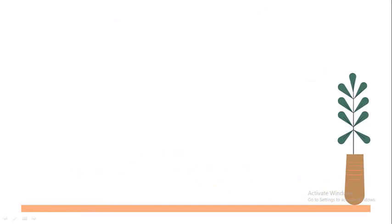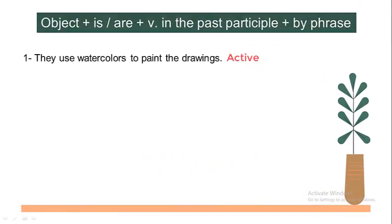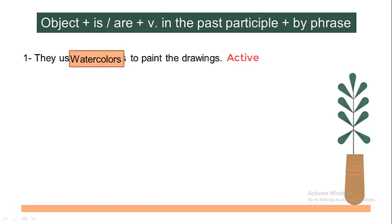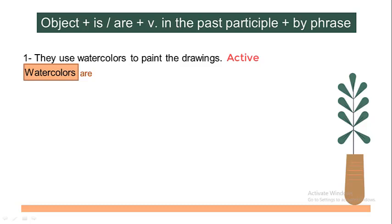Let's apply this rule to these exercises. Number one: they use watercolors to paint the drawings. They is the subject, use is the main verb, and watercolors is the receiver of the action — what do they use? They use watercolors. So we will start our passive voice with the receiver of the action, and then is or are. Watercolors — is it singular or plural? Great, it's plural. So we're going to use the verb to be are. And then the verb in the past participle: use becomes used to paint the drawings. Watercolors are used to paint the drawings.